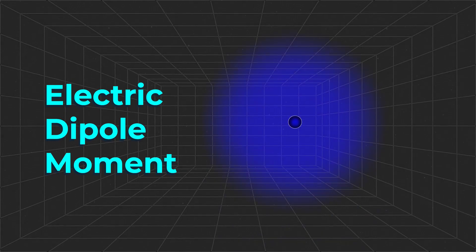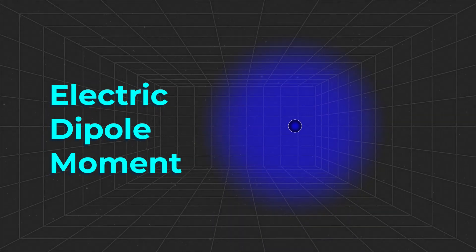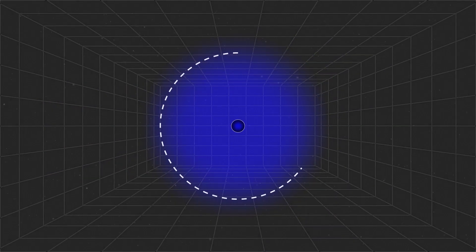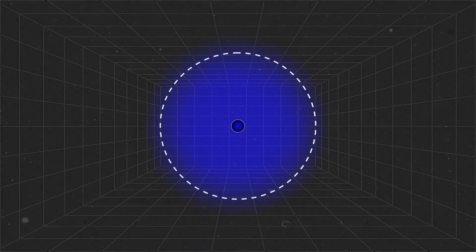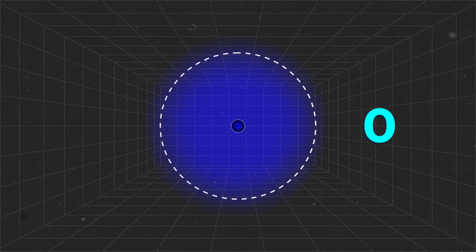However, so far, no measurement we have ever conducted has been precise enough to say with certainty either way. The technical term for this is the electric dipole moment. If the electron is completely round, with the charge spread exactly evenly between the two poles, then scientists would say it has an electric dipole moment of zero.